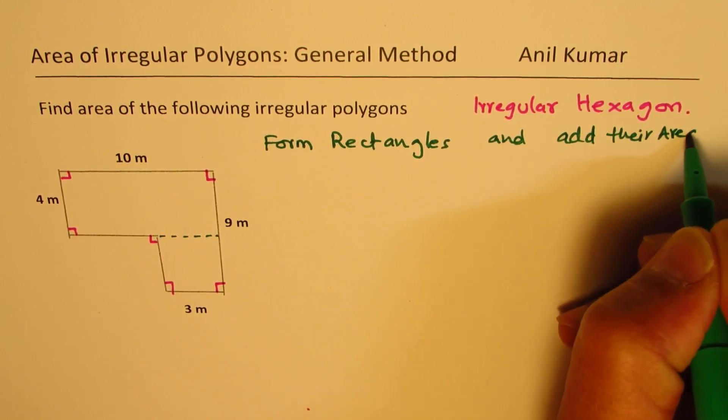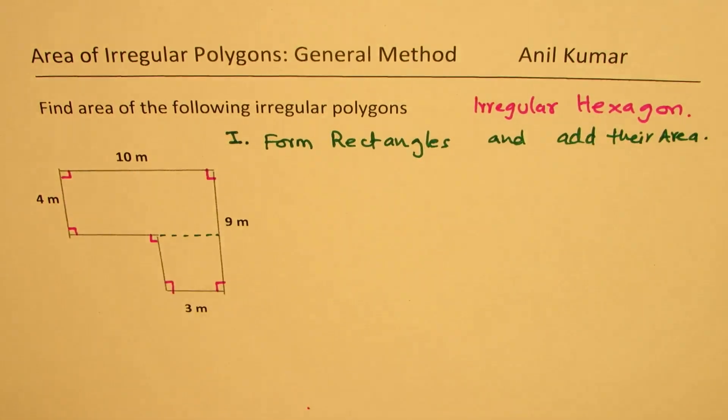That is one method. So I'll call this as our method one. So we're going to use this method to find the area of the given irregular hexagon.